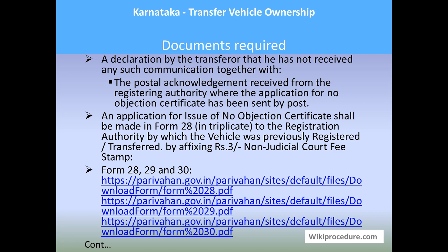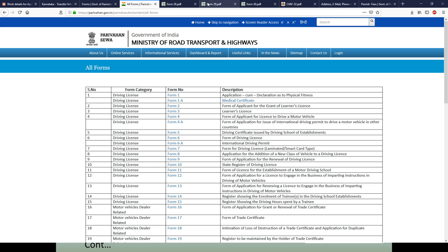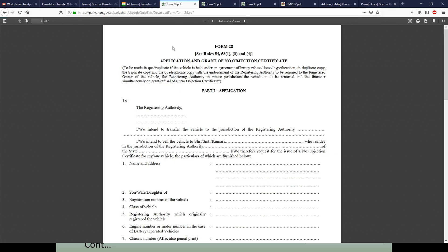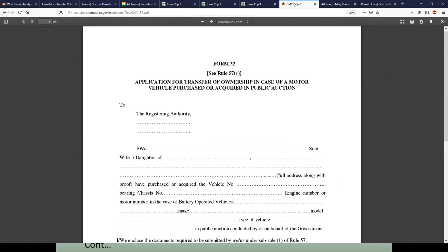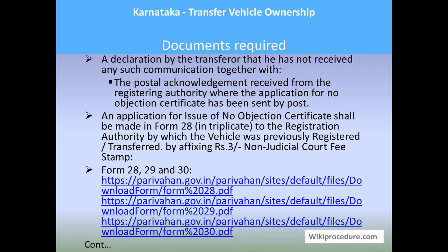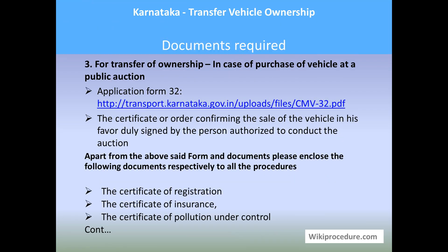Forms 28, 29, and 30 are the forms required for transfer of vehicle ownership. I will show these forms directly. This is Form 28 — the direct link page — along with Forms 29, 30, and 32. All these links give direct access to these pages for downloading the forms to save time. For transfer of ownership in case of purchase of the vehicle due to public auction, you need to provide Form 32 and a certificate or order confirming the sale of the vehicle in the buyer's favor, duly signed by the person authorized to conduct such auctions.